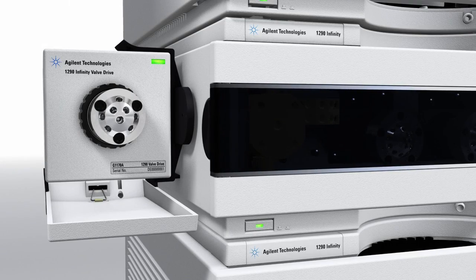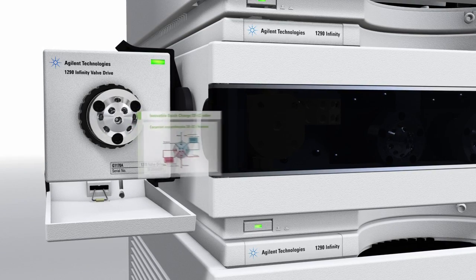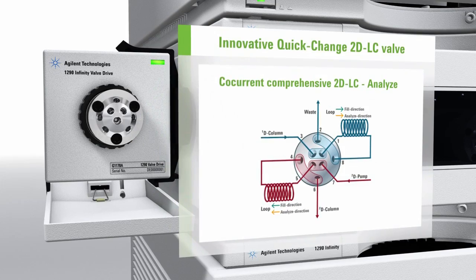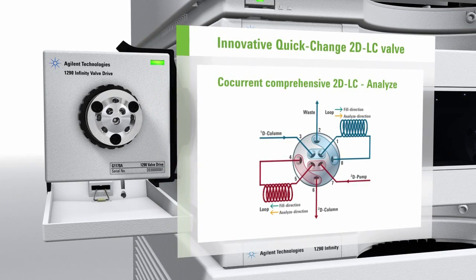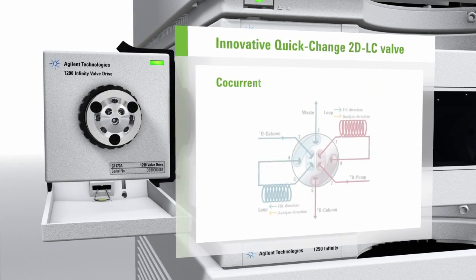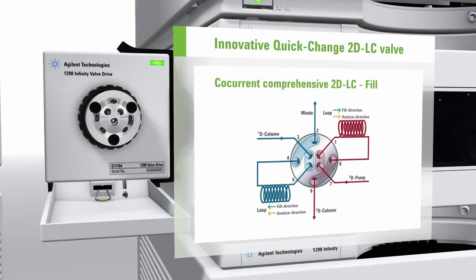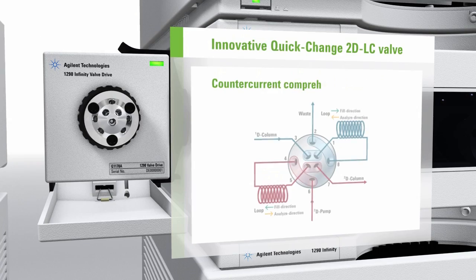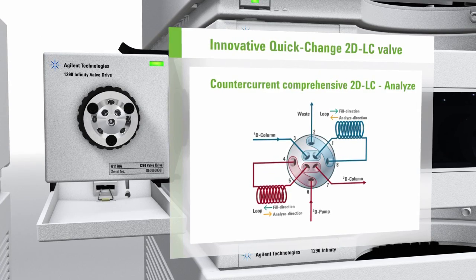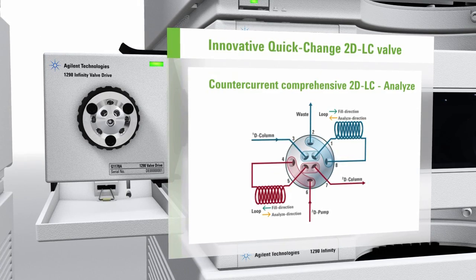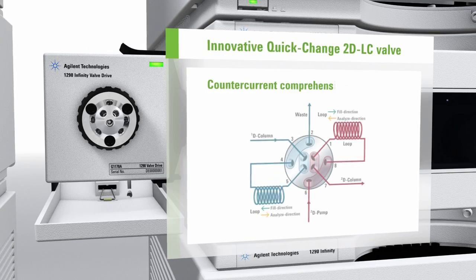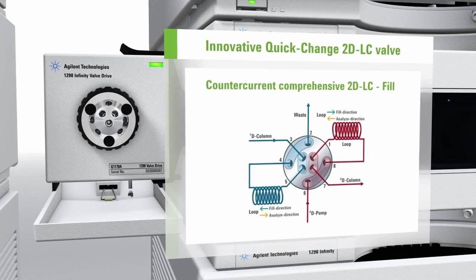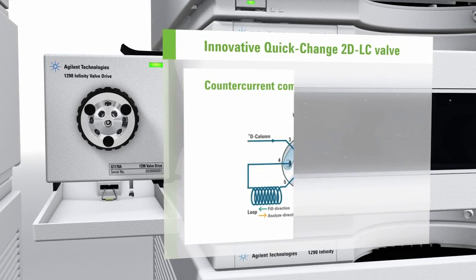A key component of this unique solution is the new Agilent 1200 Infinity Series Quick Change 2D LC valve. Connecting the first with the second dimension, it enables two absolutely symmetrical flow paths for loop filling during analysis. This reduces band broadening of samples before entering the second dimension column for sharper peaks and fewer artifacts in the data.